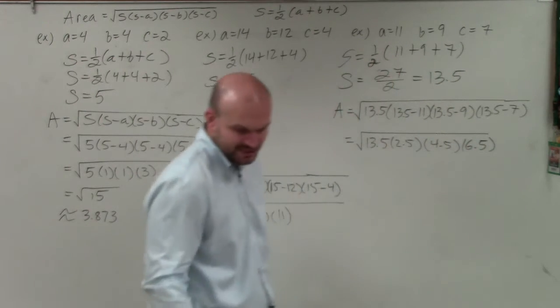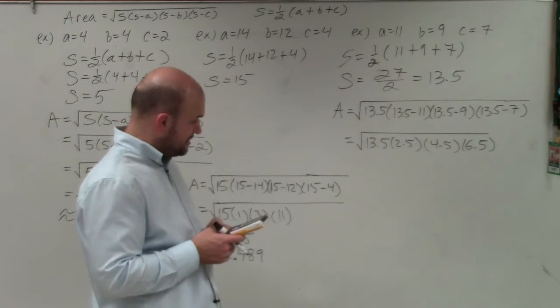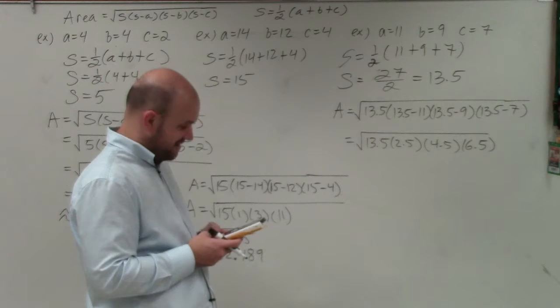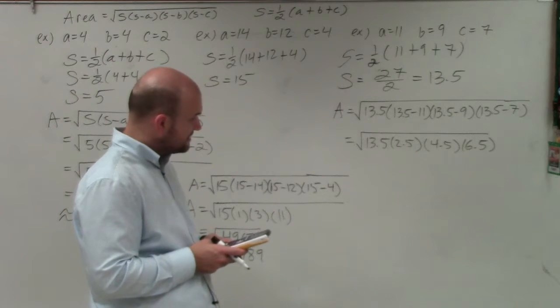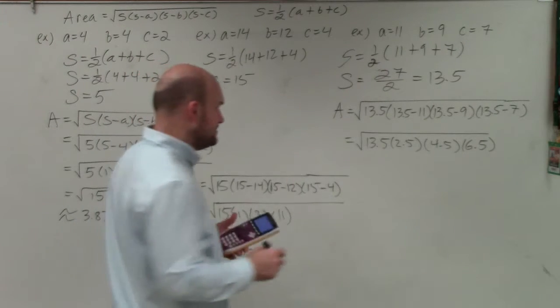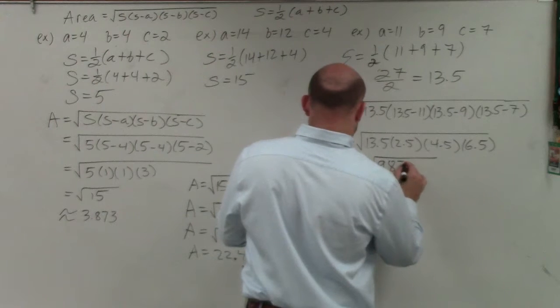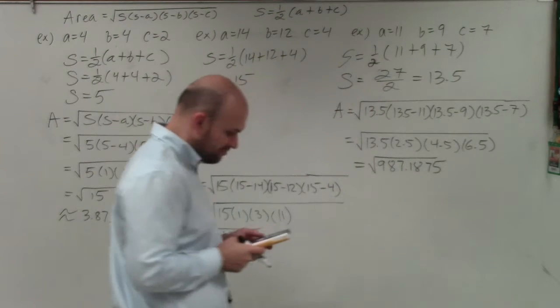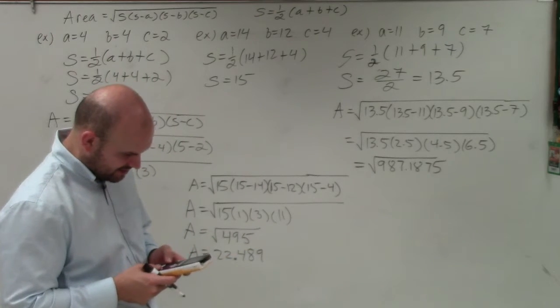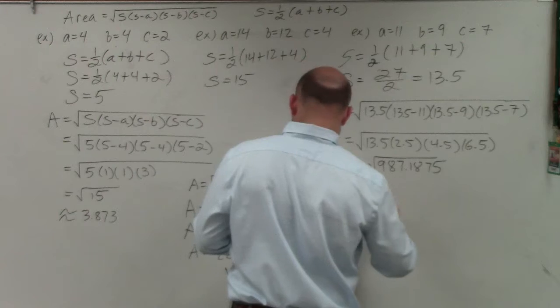Now I'm going to need to multiply each and every one of these. So we do 13.5 times 2.5 times 4.5 times 6.5, and I get 987.1875, which again, I could approximate. So we'll hit the second square root of second answer, and I can approximate that.